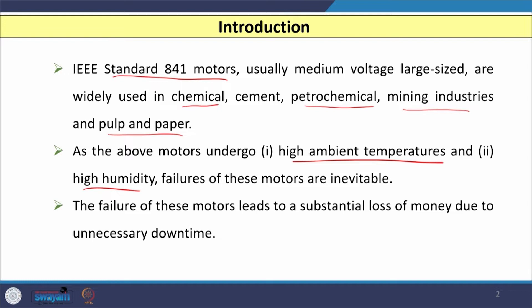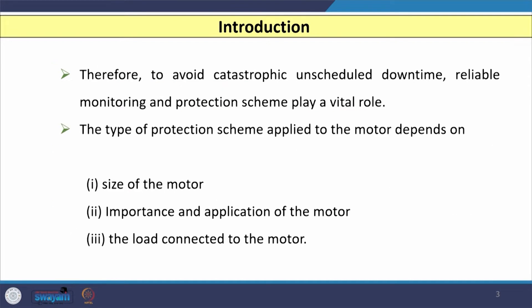The failures of these motors lead to substantial loss of revenue, because in case of motor failure, the downtime is very high. If we are not able to reduce that downtime, huge revenue loss may occur. So if we wish to avoid this unscheduled downtime, a reliable monitoring and protection scheme plays an important role.